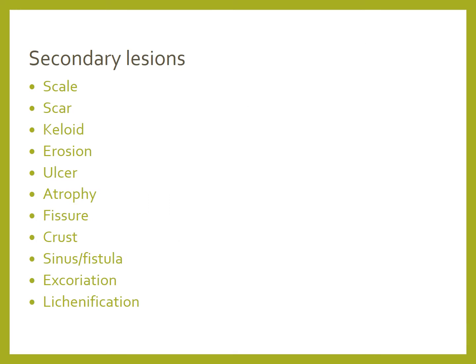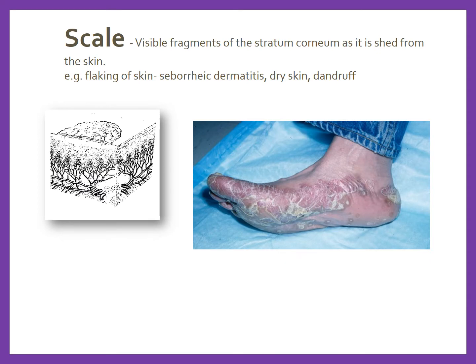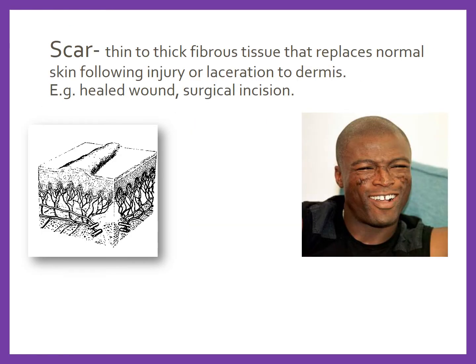Moving on to secondary lesions — a few of them are seen on the skin and some can also be seen in the oral cavity. Scale consists of visible fragments of stratum corneum shed from the skin; examples include flaking due to seborrheic dermatitis, dry skin, and dandruff. A scar is thin to thick fibrous tissue that replaces normal skin following injury or laceration to the dermis. Scars are less likely in the oral cavity because the oral mucosa has a high turnover rate that does not easily allow scar formation.